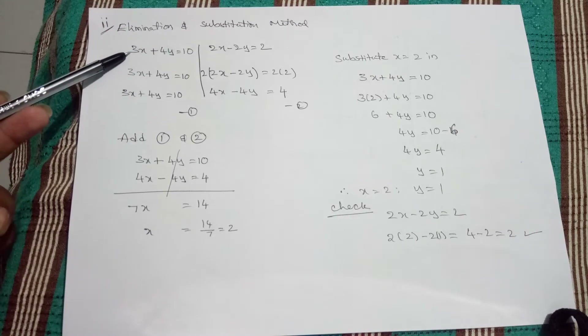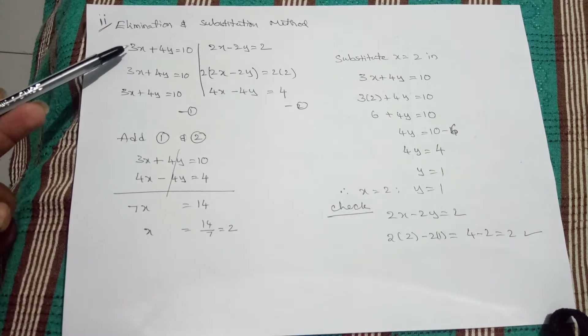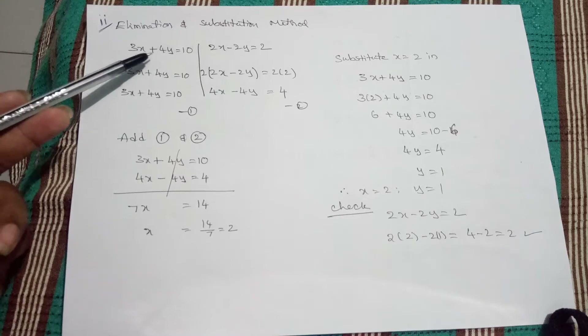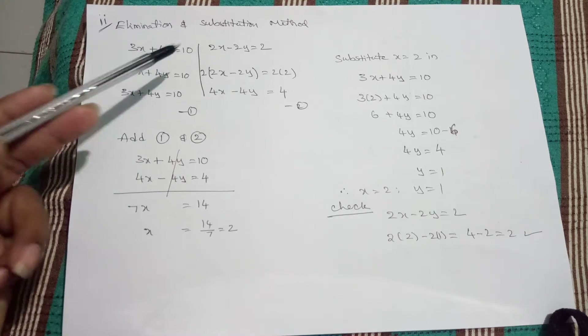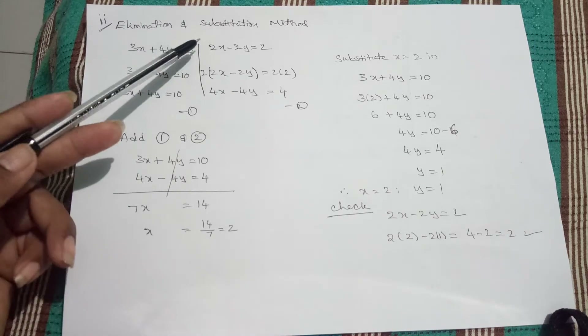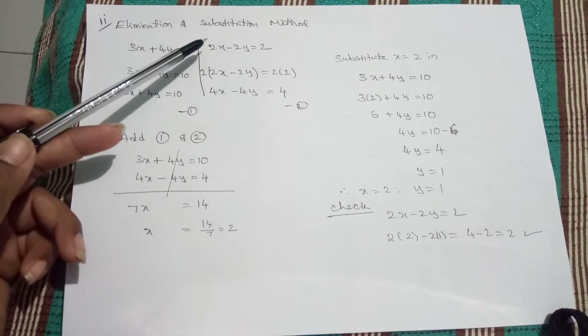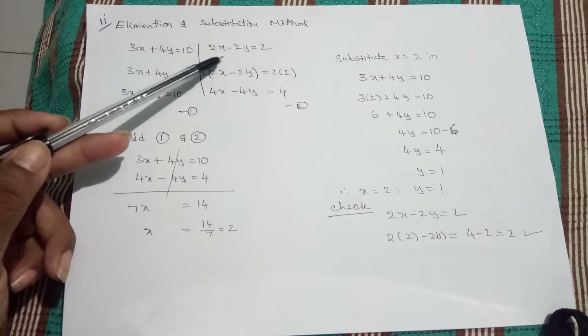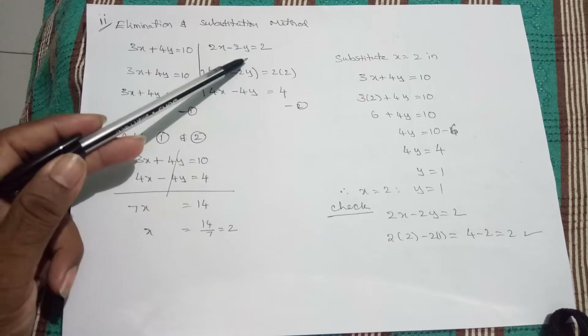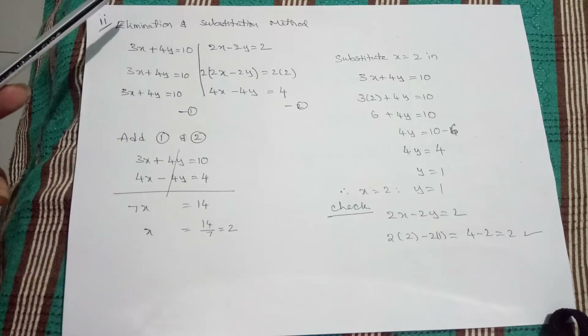The first equation is 3x plus 4y equal to 10. The second equation is 2x minus 2y equal to 2.